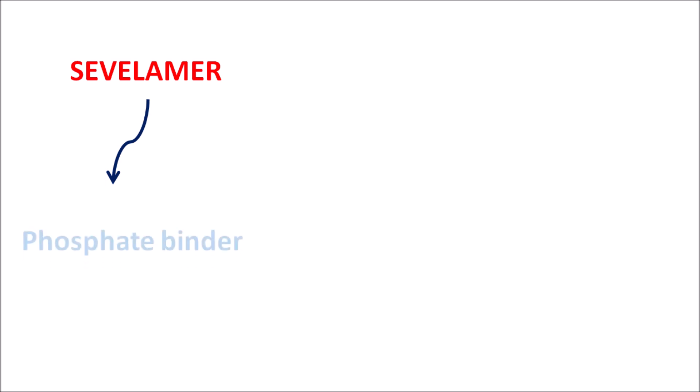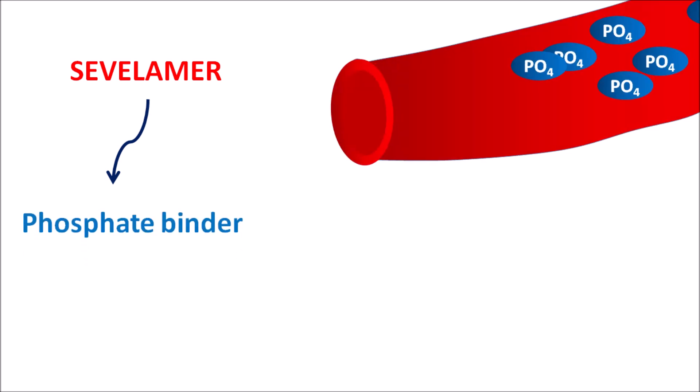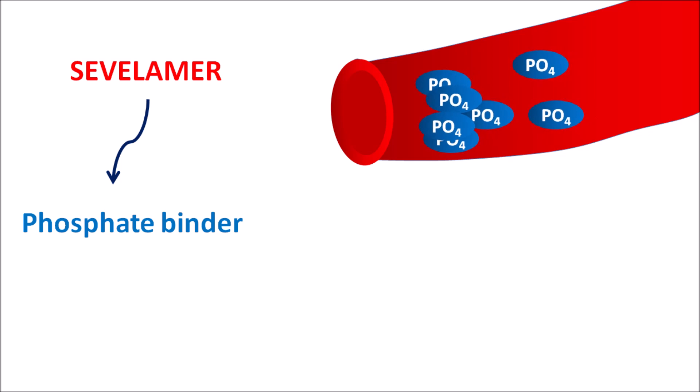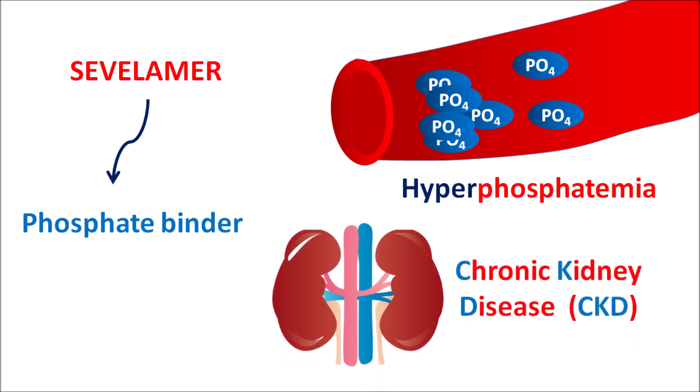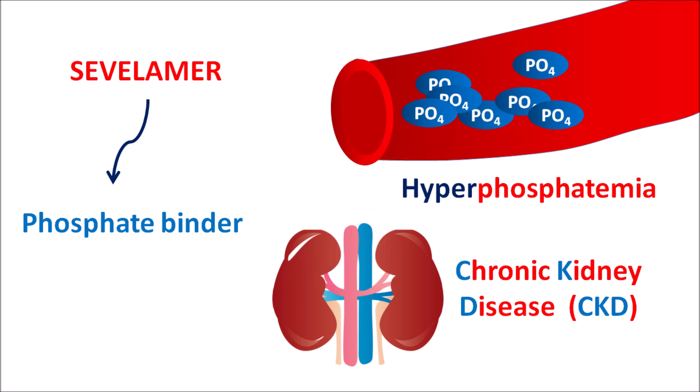In this video, we discuss sevelamer. This drug is a resin used as a phosphate binder. When phosphate levels are excessively increased in the serum, it can produce a condition called hyperphosphatemia, which can cause calcification of vascular smooth muscle and affect the bones and cardiovascular system. Normally, phosphate is excreted through the renal system, but in patients with chronic kidney disease (CKD), phosphate molecules are not significantly excreted, so serum phosphate levels become elevated.